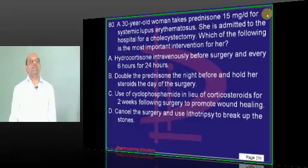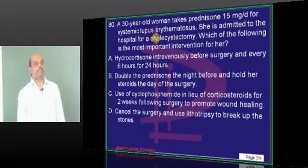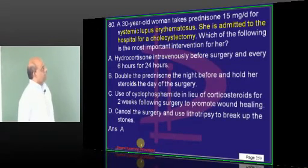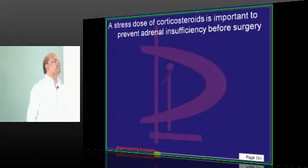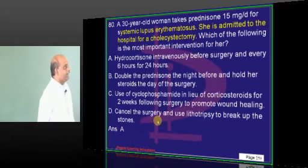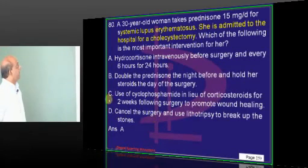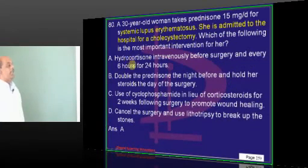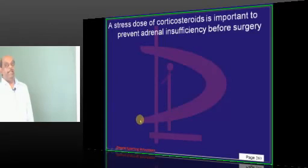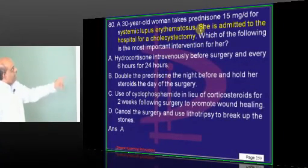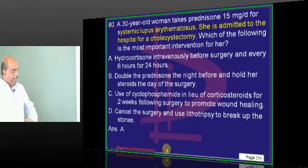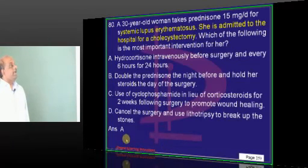A 30-year-old with SLE on prednisolone undergoing cholecystectomy: the most important intervention is a stress dose of corticosteroids. When a patient is on long-term steroid therapy, the adrenal glands are not ready to compensate for surgical stress, so stress doses must be given.